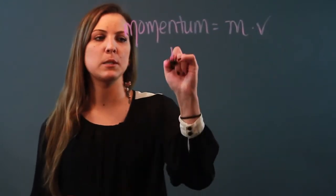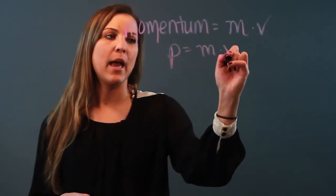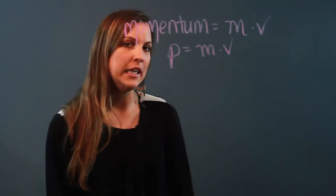Normally the variable that's used to represent momentum is p, so p equals mv is the formula that you will see.